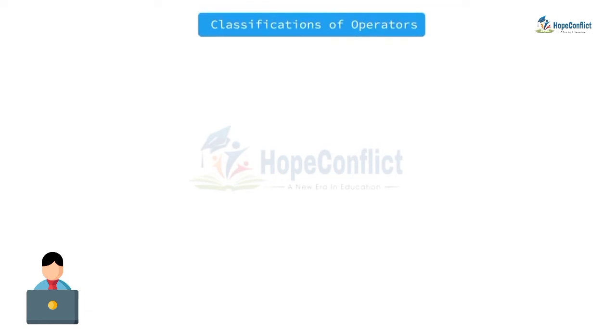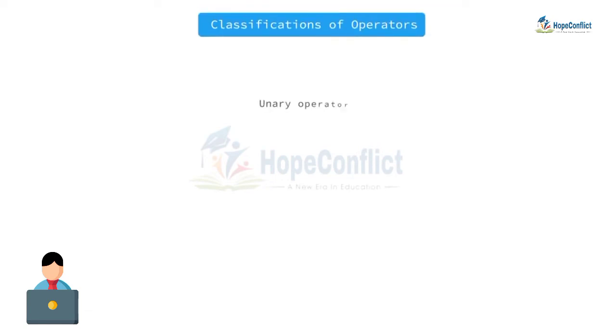Now let us discuss the classification of operators. We have unary operators, binary operators, and ternary operators.